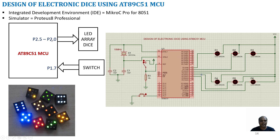The 6 LEDs are connected to Port 2.0 to Port 2.5, and I am going to connect a push button switch to Port 1.7. So whenever we press the switch a random number between 1 to 6 will be generated. Depending upon that random number, the number of LEDs will glow, which resembles a die in a real time scenario.